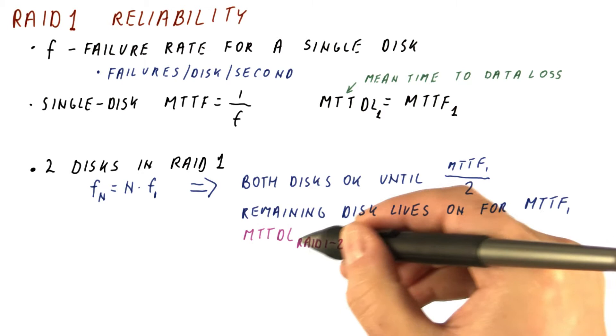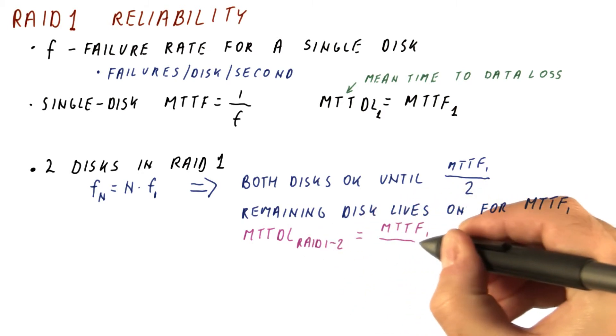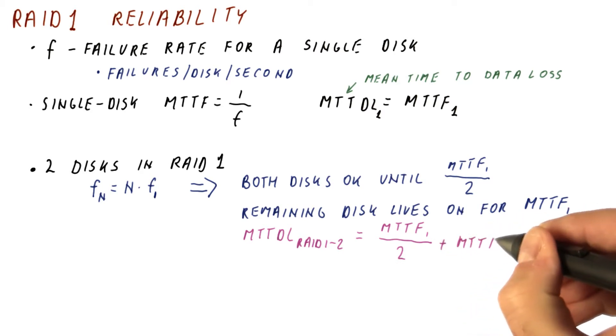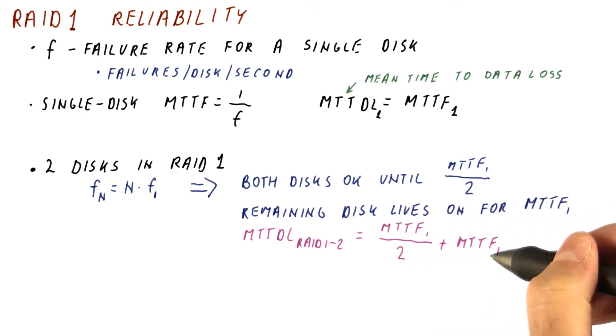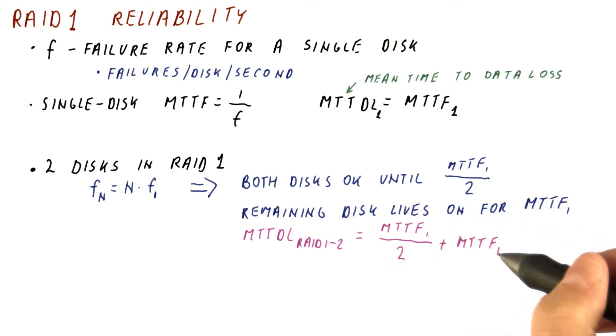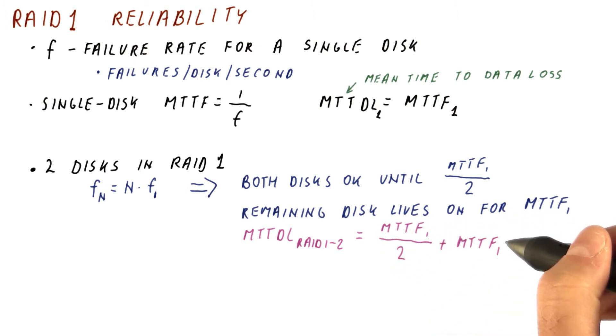So overall, the mean time to data loss for RAID 1 with two disks is going to be the MTTF of a single disk over two plus the MTTF of a single disk. And now we bought two disks and used them in an array that has the capacity of only a single disk. So we basically paid for the extra disk just to get reliability. And what we get is just one half more of the MTTF that we would normally get with only a single disk. So what's the point?